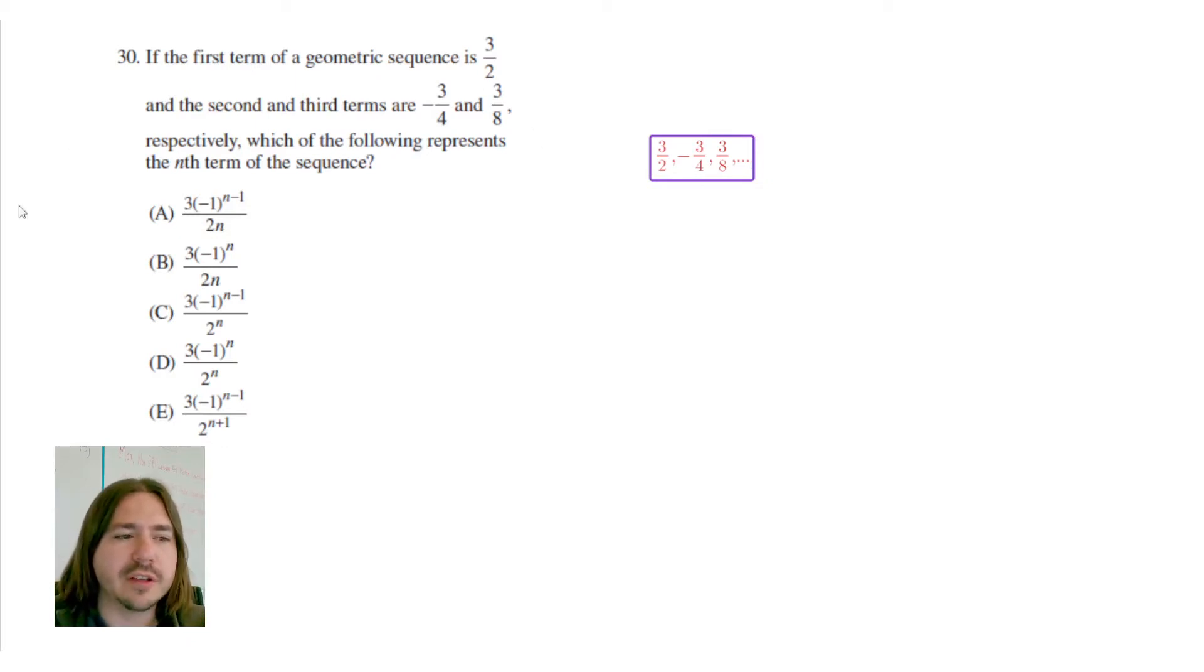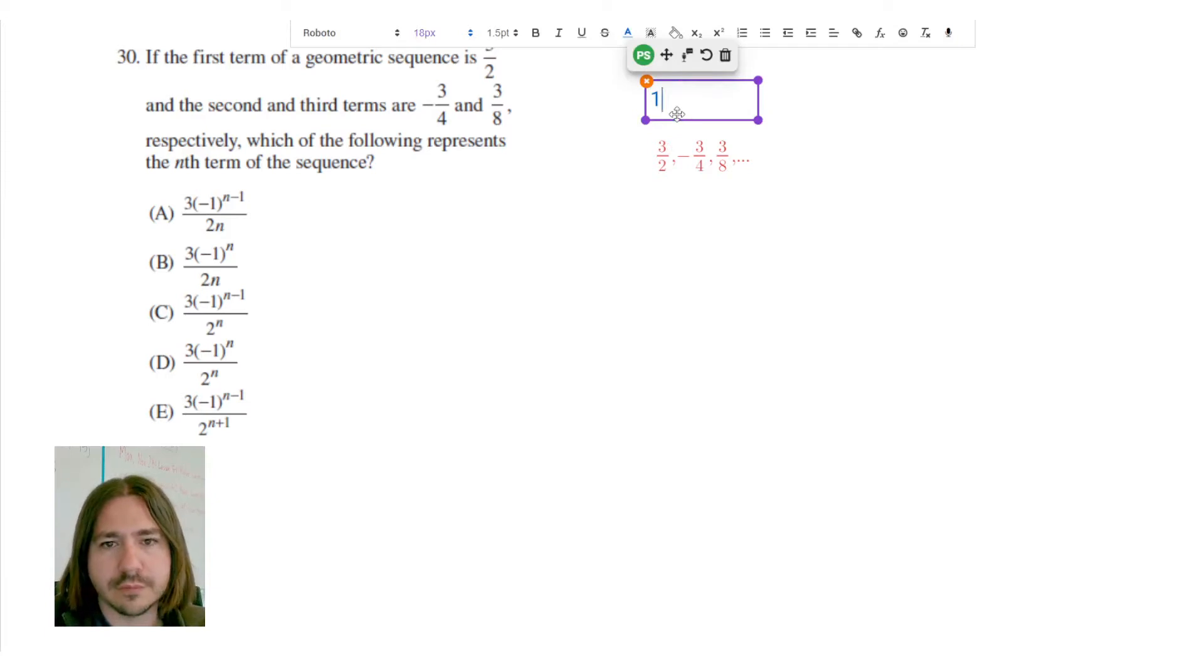So like in other words, if I plug in 1, I should get 3 halves. If I plug in 2, I should get negative 3 fourths. And if I plug in 3, I should get 3 eighths. So this is the first term, the second term, and the third term.